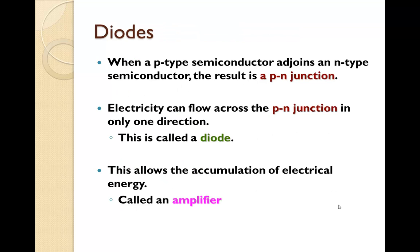A diode is when you put these two things together. When a p-type semiconductor adjoins an n-type semiconductor, the result is a p-n junction. Electricity can flow across the p-n junction in only one direction. This is called a diode. This allows the accumulation of electrical energy, which is then called an amplifier.